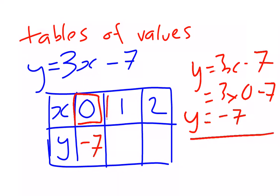If x was 1, 3 times 1, 3x is 3, so I've got 3 minus 7, negative 4. If x is 2, 3 times 2 is 6, 6 minus 7, negative 1. We've filled in our table of values. You'll meet these a lot.